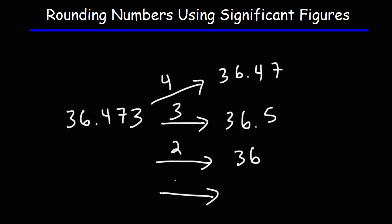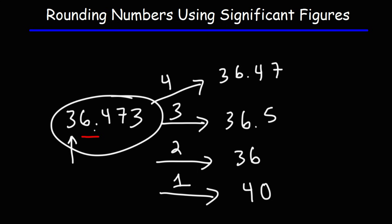Finally, what if we want to round it to one significant figure? In this case, let's focus on the first significant digit, which is a 3. Focusing on the number to the right of 3, we have a 6. So that's in the category of 5 or more, which means we're going to round a 3 up to a 4. So 36.473 — we're going to round it to 40. 40 is closer to this number than 4 is.